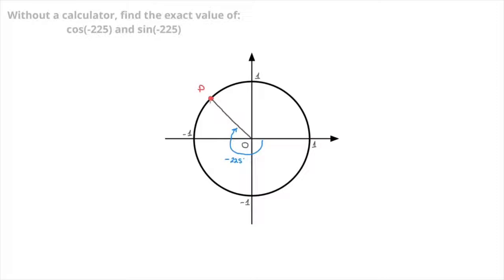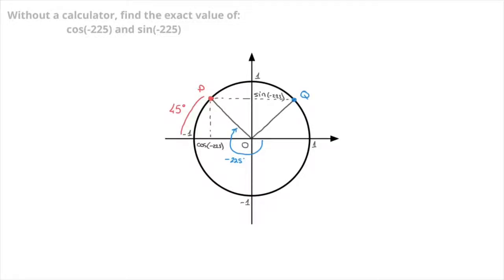By definition, P has coordinates cosine of negative 225 and sine of negative 225. Just as we did previously, we make a note of the angle separating point P from 180 degrees — and we can see that this angle is 45 degrees. We now reflect point P across the vertical axis to define a new point on the unit circle, which we call Q. I add the radius OQ, like so. Since Q and P are the reflections of each other across the vertical axis, the angle point Q corresponds to will equal 45 degrees.